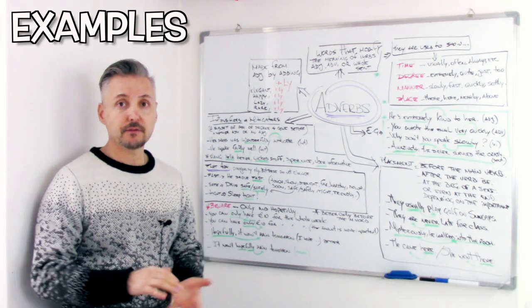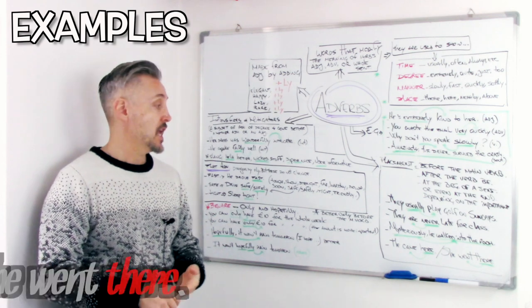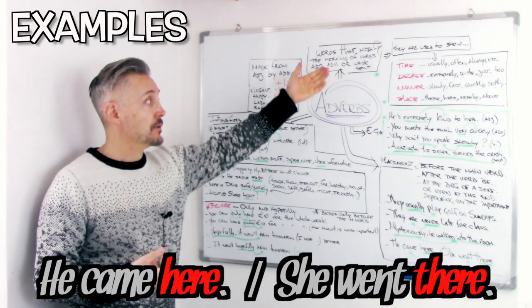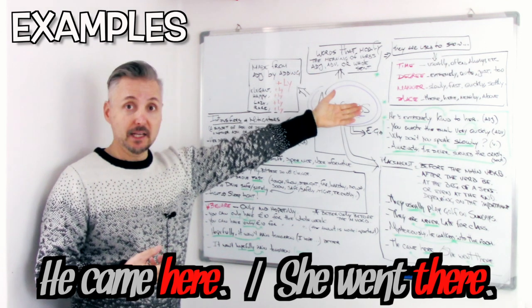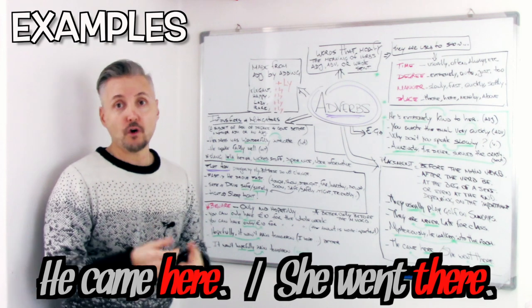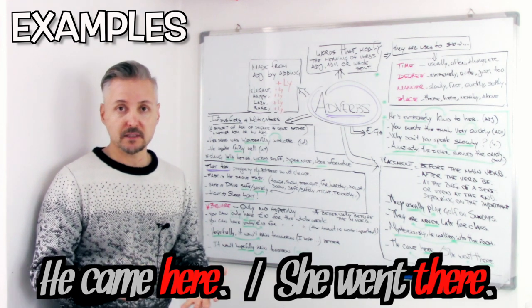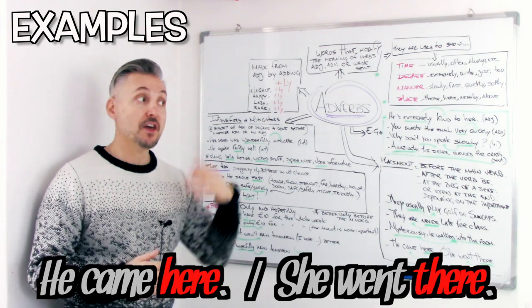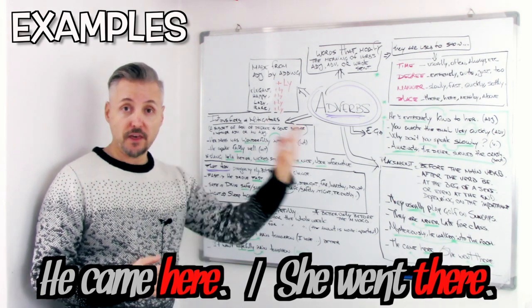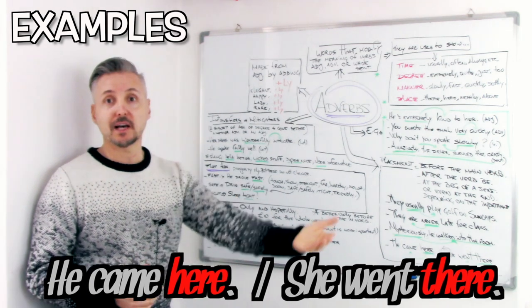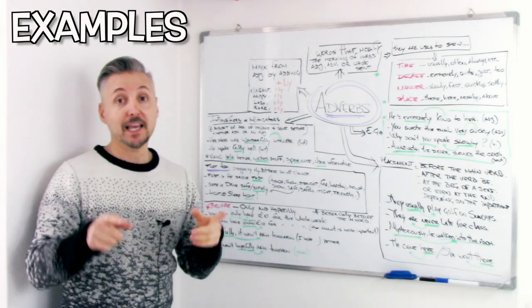And then, we have other examples. Like, he came here. Here is the adverb of place, yes. And it goes right after the verb, or at the end of the sentence. He came here. Or, she went there. She went there. Adverb of place. And it goes at the end of the sentence, in this case.